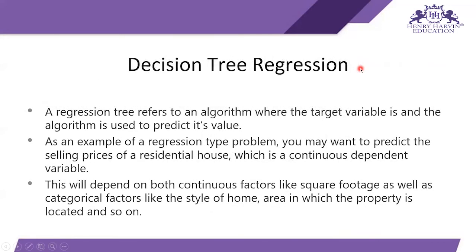Next comes decision tree regression, where we solve regression problems — when we want output as a continuous value like an integer or decimal number. A regression tree is an algorithm where the target variable is continuous and the algorithm predicts its value. When we have a continuous dependent variable — for example, predicting the selling price of a residential house — we use decision tree regression.